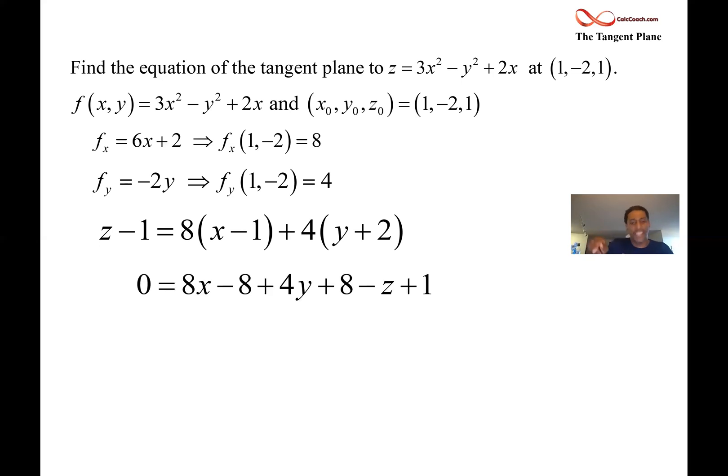So 8x minus 8 and 4y plus 8 and then subtract the z over and add the 1 over. And you'll find then that we have the 8s cancel out. And we're done. 8x plus 4y minus z plus 1 equals 0. That's the equation of the tangent plane at that point to that surface. Z is defined explicitly as a function of x and y.